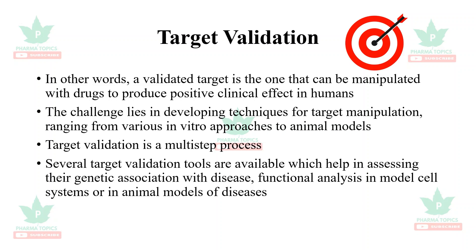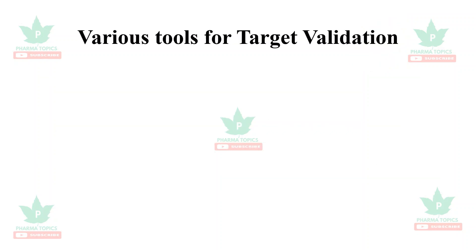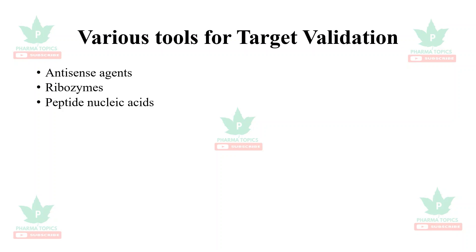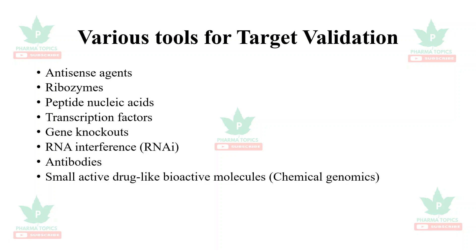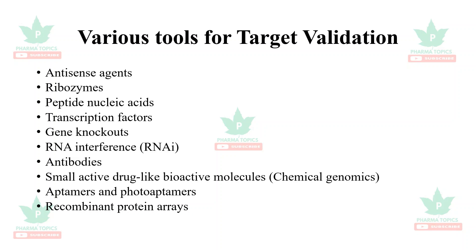Several target validation tools are available which help in assessing their genetic association with the disease and functional analysis in model cell systems or in animal models of diseases. The various tools for target validation are: antisense agents, ribozymes, peptide nucleic acids, transcription factors, gene knockouts, RNA interference, antibodies, small active drug-like bioactive molecules (chemical genomics), aptamers, photo aptamers, and recombinant protein arrays.